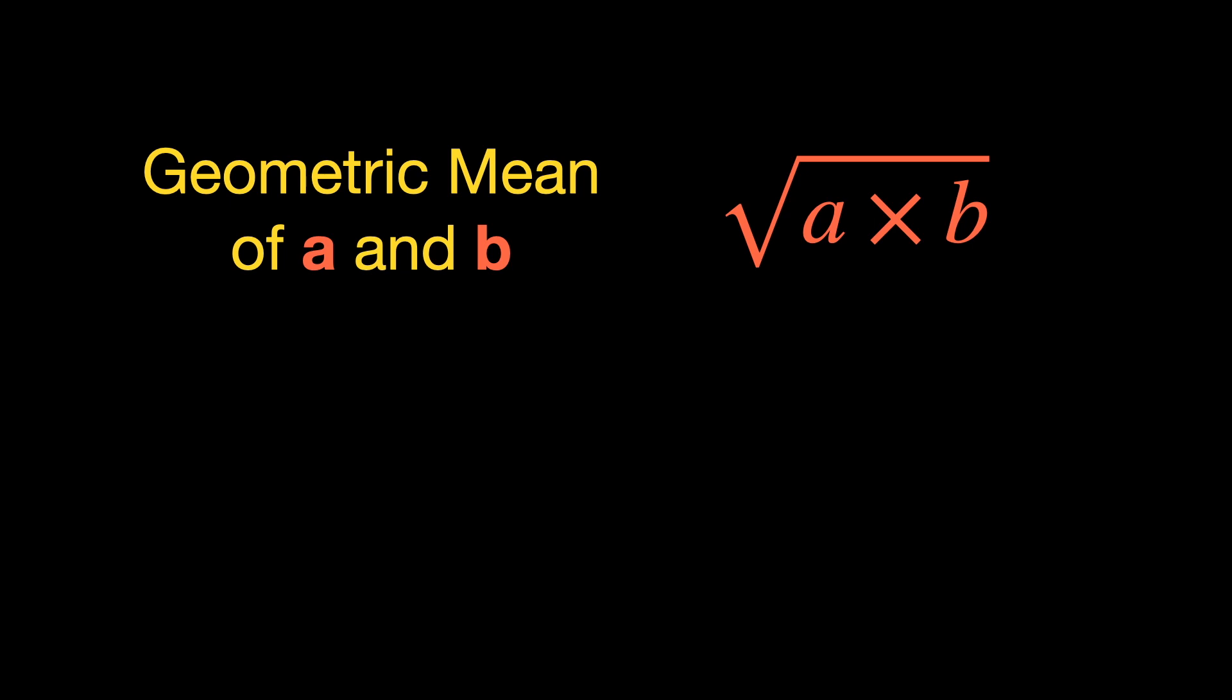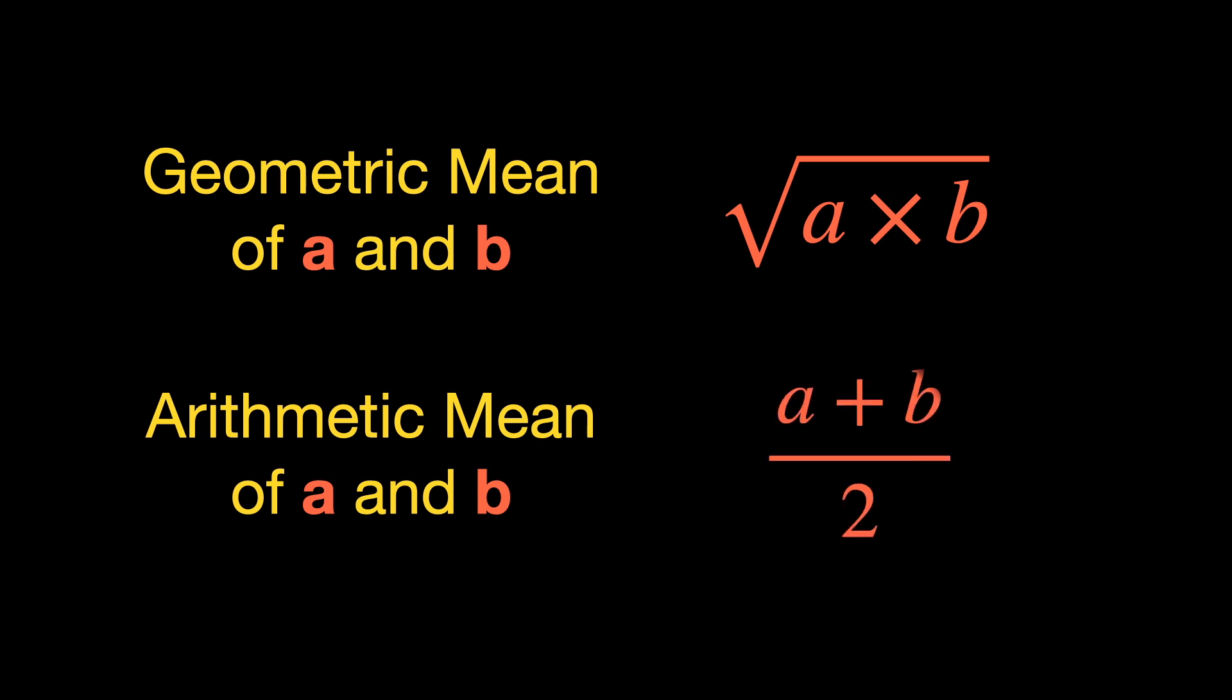For the moment we are only dealing with positive quantities. The definition of arithmetic mean of A and B, two numbers, is just the average of the two numbers, that is A plus B by 2.